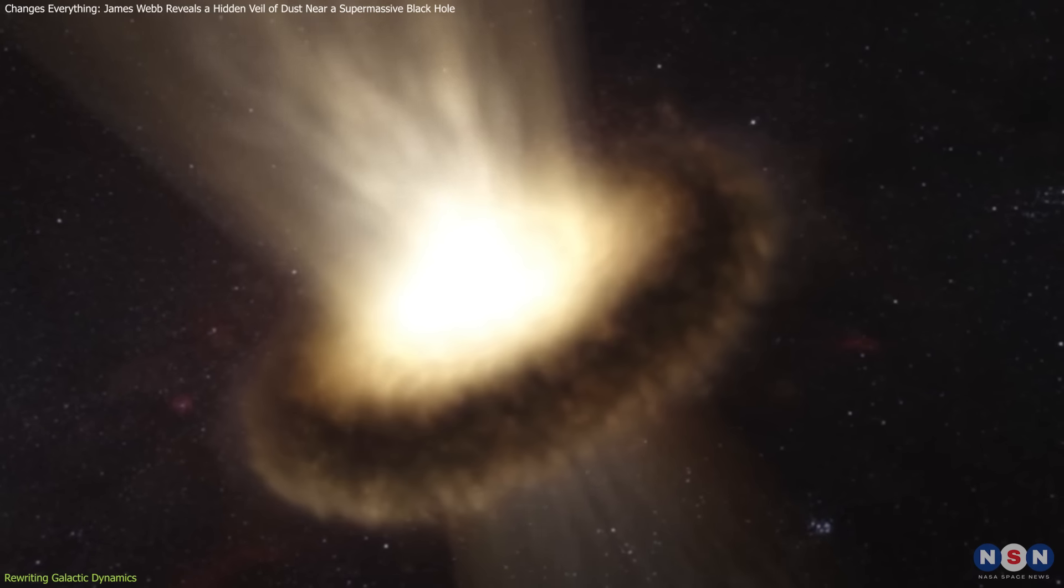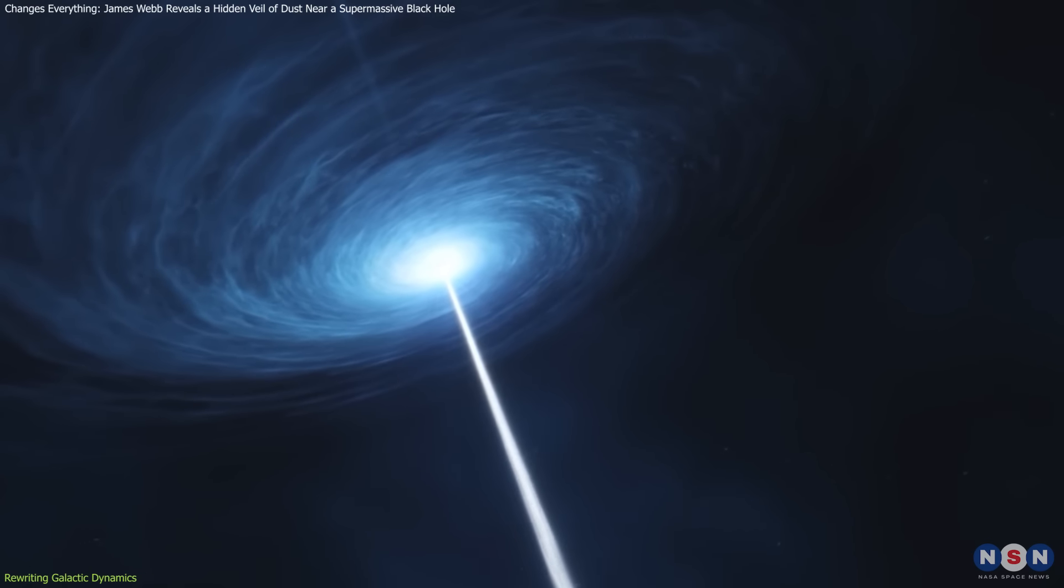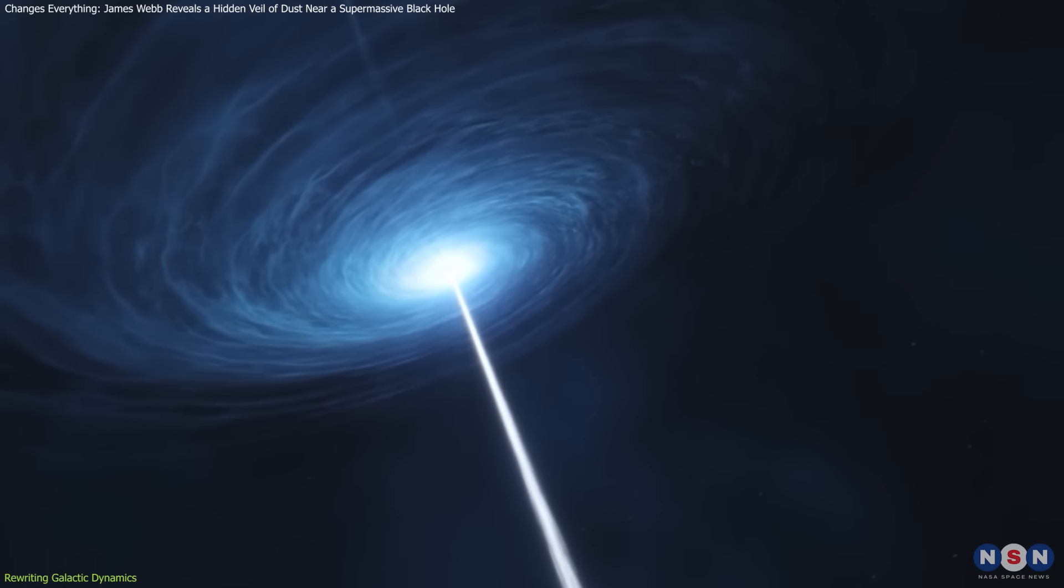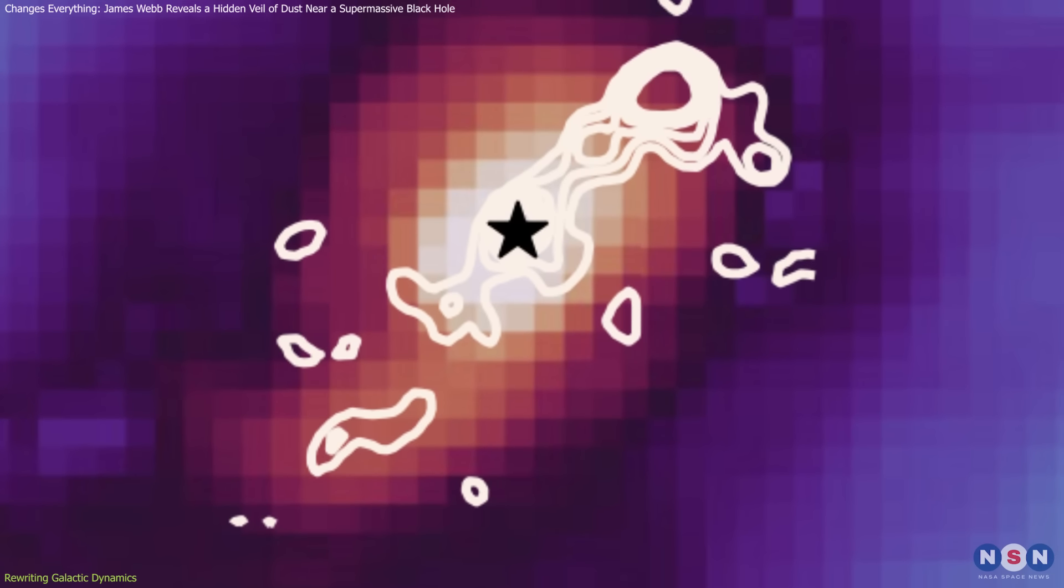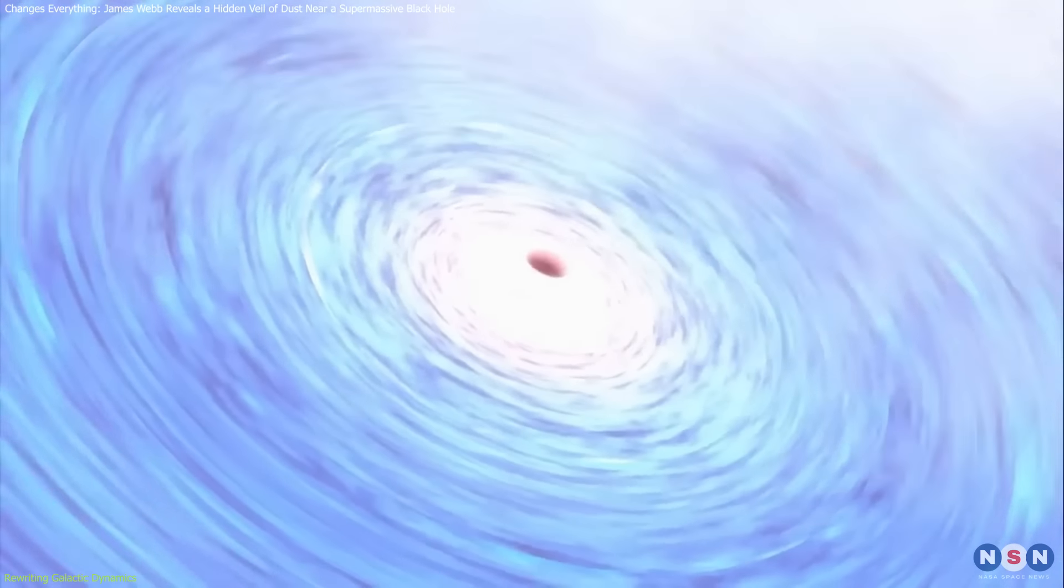Traditionally, the dusty torus was thought to play a central role in energy transfer within an AGN, but Webb's observations reveal that jets might have a more crucial role than previously thought. The different temperatures of the polar dust compared to the accretion disks dust suggest that the processes in these regions are more varied and complex